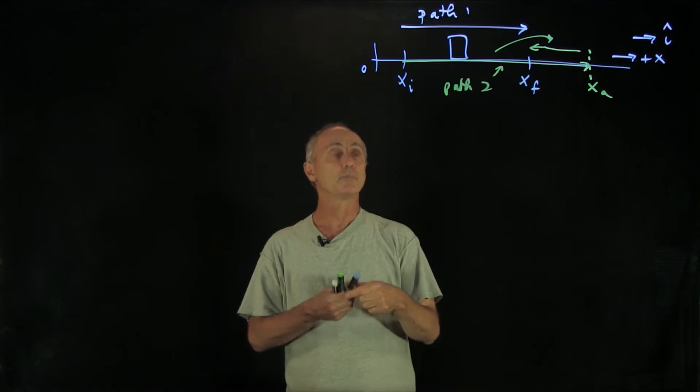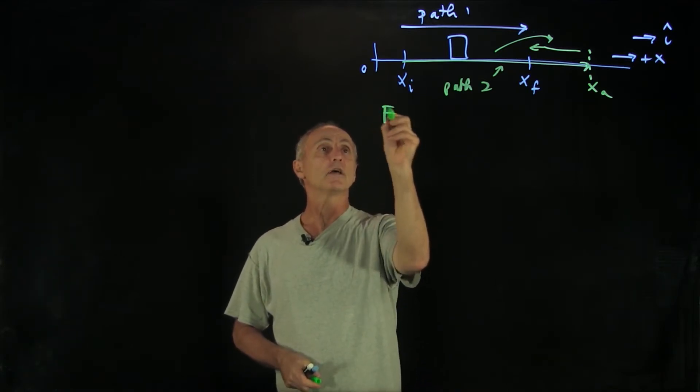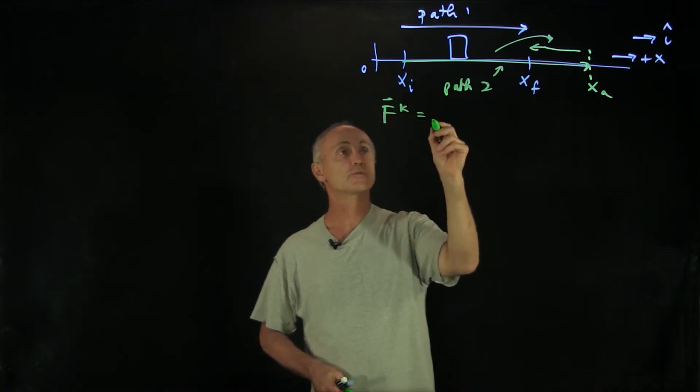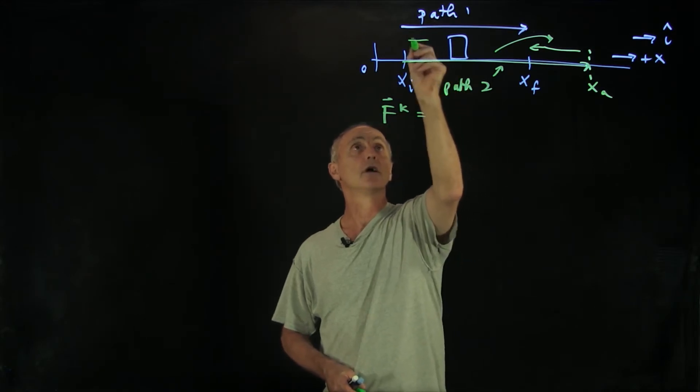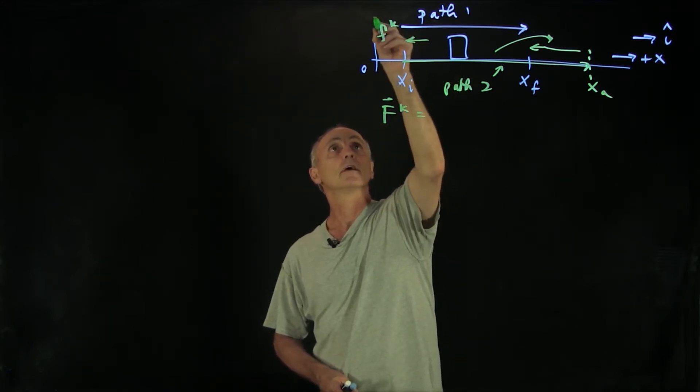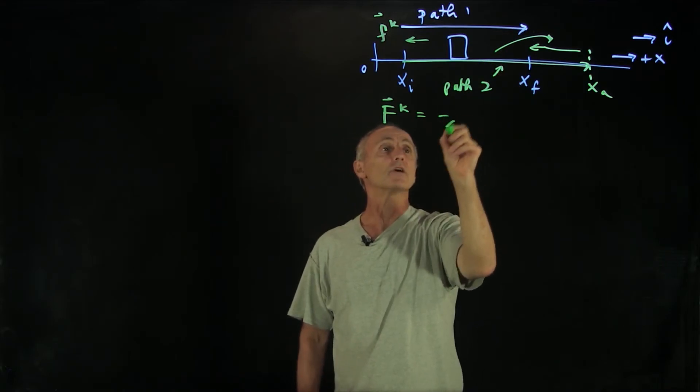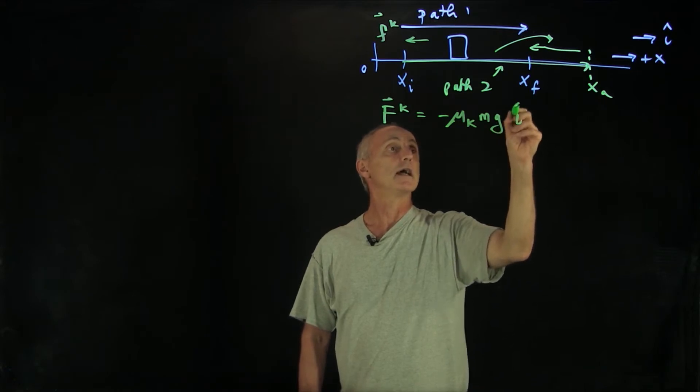So for path one, we'll begin by calculating. Our force here is the kinetic friction force. The kinetic friction force, in this case, is going to oppose the motion. So we have force kinetic for path one, and that is minus μ_k mg in the i hat direction.